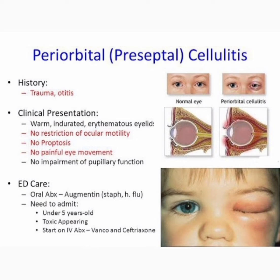Clinical presentation: warm, indurated, erythematous eyelid — look at the upper right image. No restriction of ocular motility, no proptosis, no painful eye movement, no impairment of pupillary function. ED care: oral antibiotics (Augmentin). Admit if under 5 years old and toxic-appearing; start IV vancomycin and ceftriaxone.